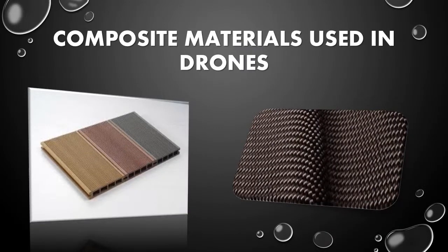A drone works on the same principle as that of a remote control helicopter, but its construction is quite different. A typical drone is made of light composite materials to reduce weight and increase maneuverability. The composite material strength also allows it to cruise at extremely high altitudes.